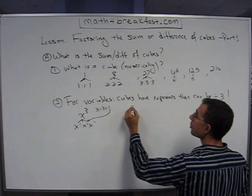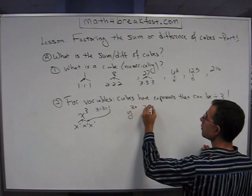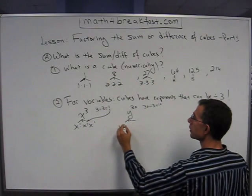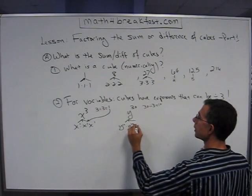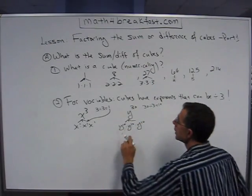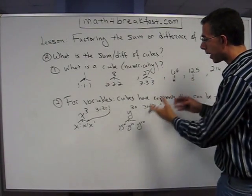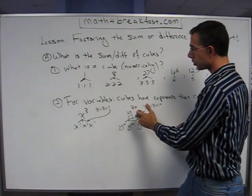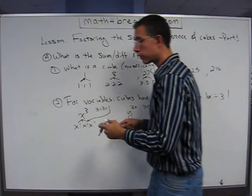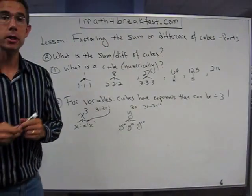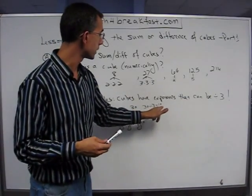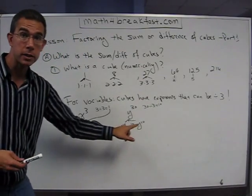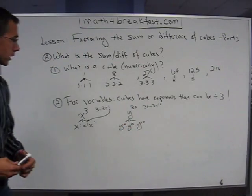Example here, x to the third, split that up into x times x times x, because 3 can be divided by 3. 3 divided by 3 equals 1, and I put that 1 over here, 1, 1, 1. Y to the 30th. Well, 30 can be divided by 3 equals 10, so when I split this up, it's y to the 10th times y to the 10th times y to the 10th. If you can divide the exponent by 3, then this term, this y to the 30th, this x to the 3rd, each of those, or whatever you're looking at, is a perfect cube.